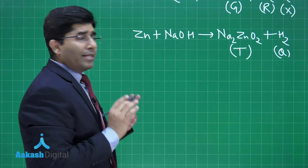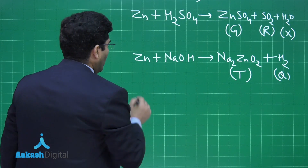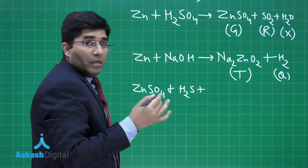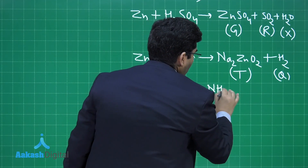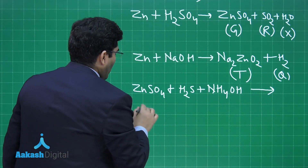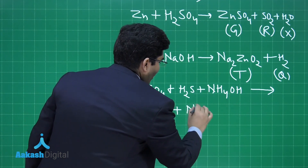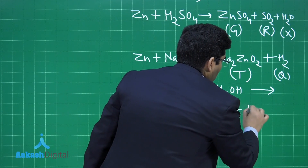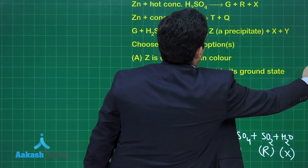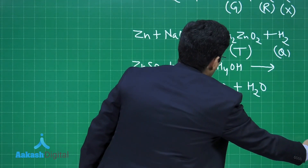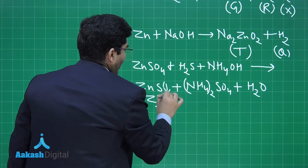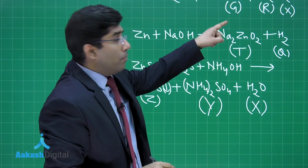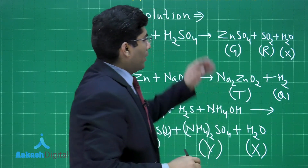In the next reaction, G which is ZnSO4 from the first reaction reacts with H2S and NH4OH solution, giving ZnS precipitate plus ammonium sulfate (NH4)2SO4 plus H2O. So Z is ZnS (the precipitate), Y is (NH4)2SO4, and X is H2O — which is the same X formed in the first reaction.